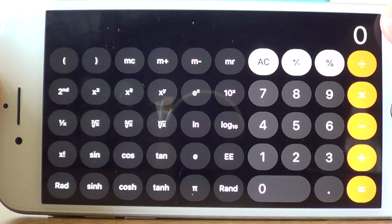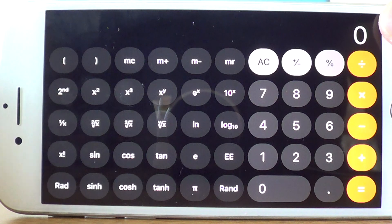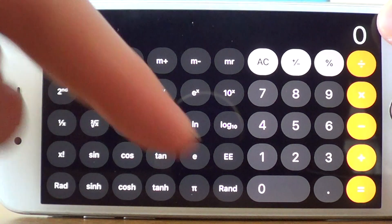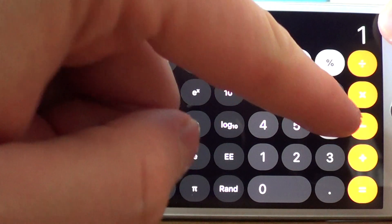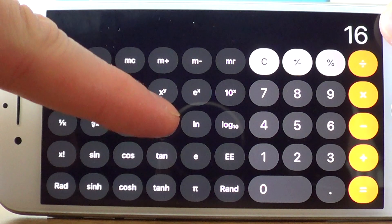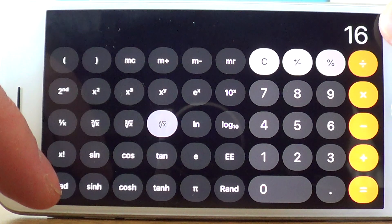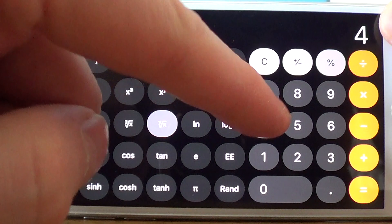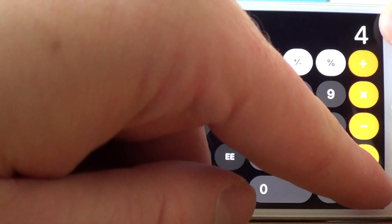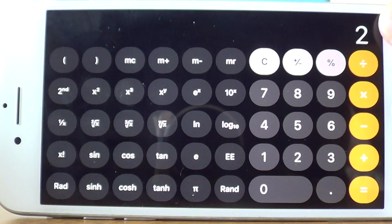Let's say we need to work out the fourth root of 16. So we type in 16, then press the root key, then press 4, and press equals. And we get the answer 2.